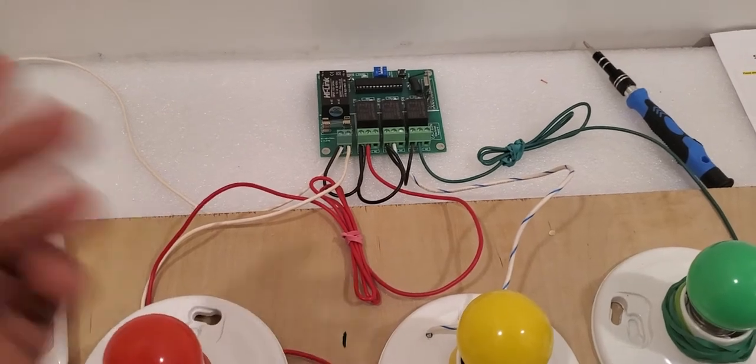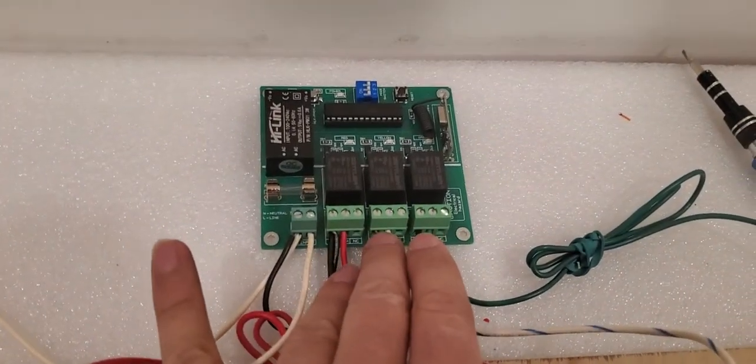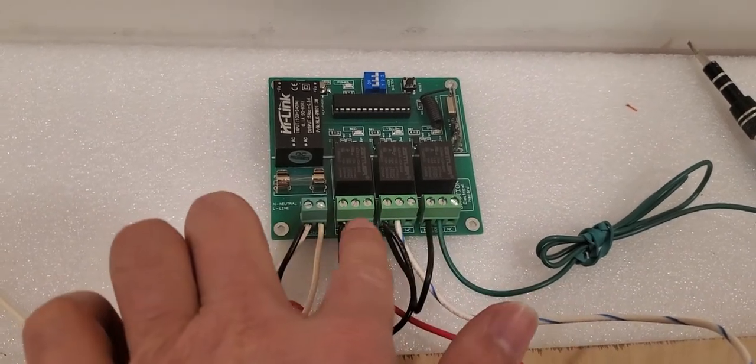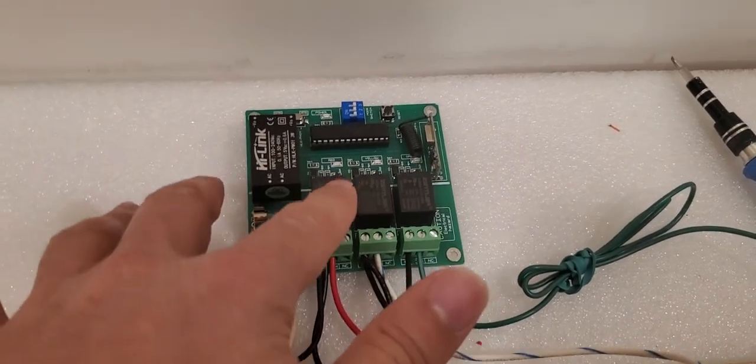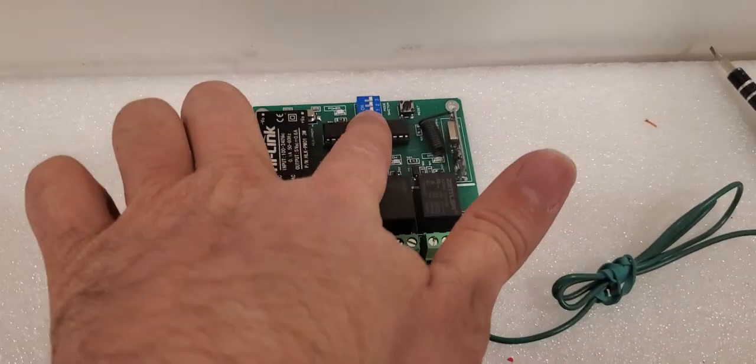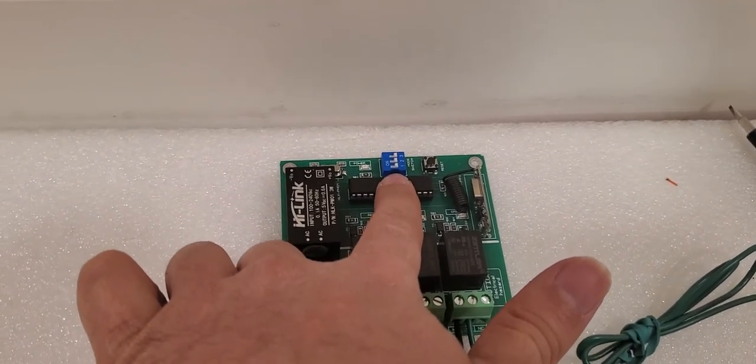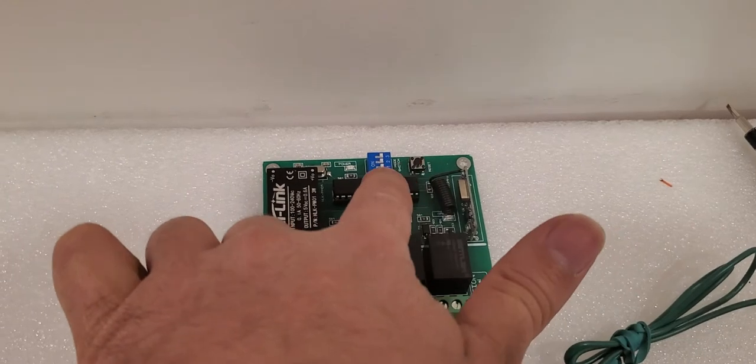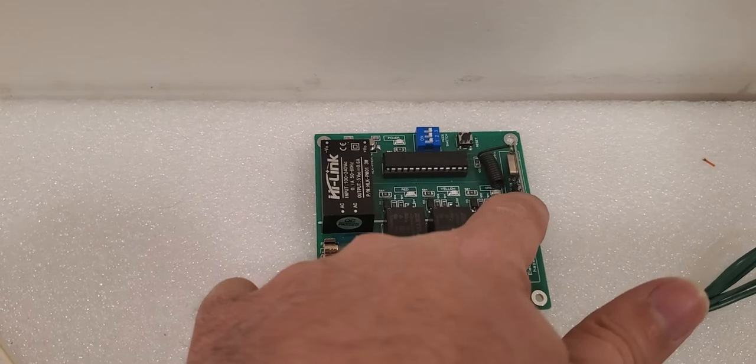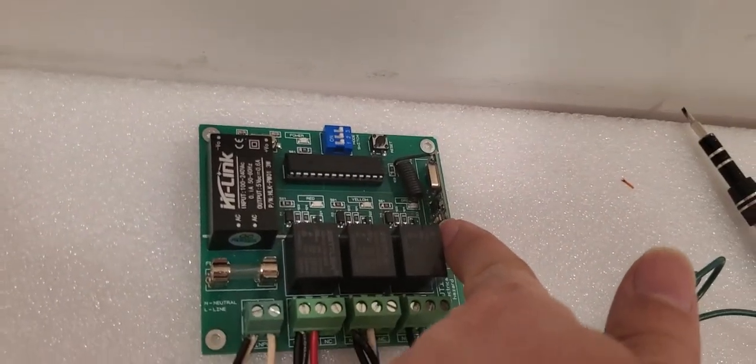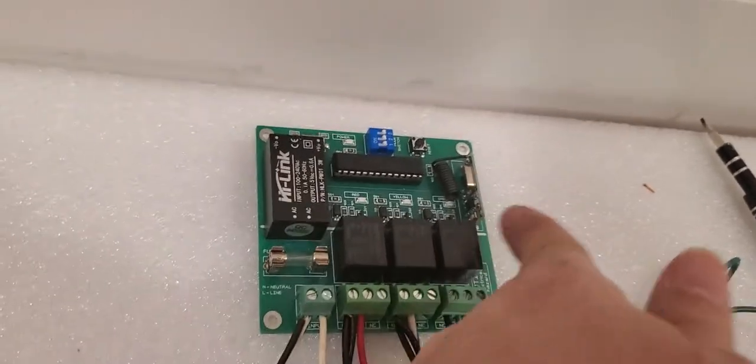We have three different channels here. You can use either only one channel or two channels. This is the input and we have a switch here in order to change the modes. Then after you change to any modes you need to hit this reset button. We have receiver here and we have also pairing push button here.